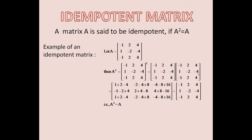Similarly, first row, third column: minus 1 into 4 gives minus 4, 2 into minus 4 gives minus 8, 4 into 4 gives 16. You have to simplify. Like that, you can find out for the other rows also — second row first column, second row second column. You will have to multiply and find the elements of the square matrix, which is A squared.